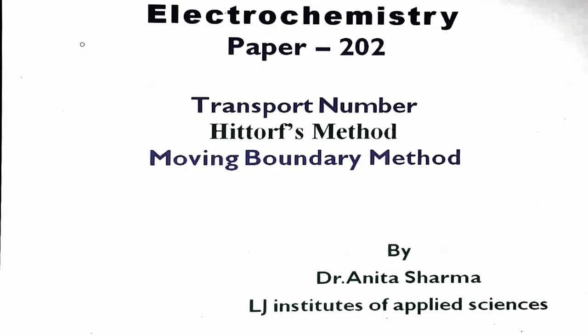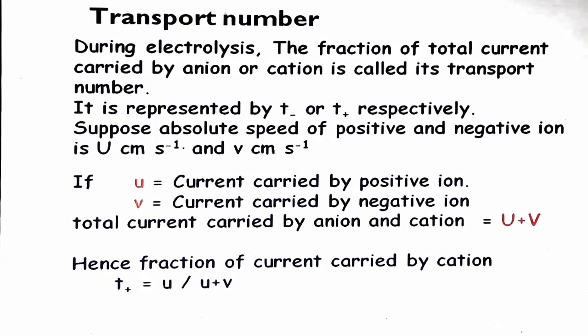Transport number is the fraction of total current carried by an anion or cation, and it is called its transport number. It is represented by T-minus or T-plus respectively. T-plus is the transport number of the cation and T-minus is the transport or transference number of the anion.